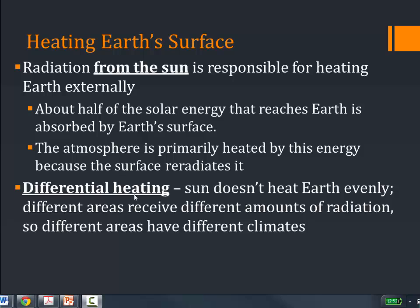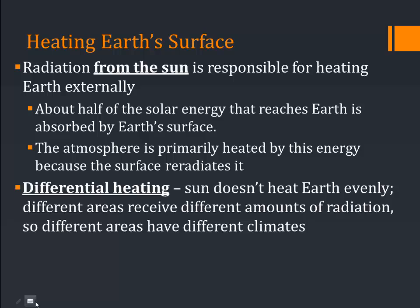There's also differential heating, and that occurs because the sun doesn't hit every area of the Earth at the same angle. Areas with more direct sunlight get warmer, areas with less direct sunlight get smaller amounts of radiation, and this leads to the different climate zones on Earth. It also causes the seasons.